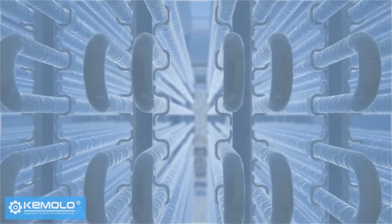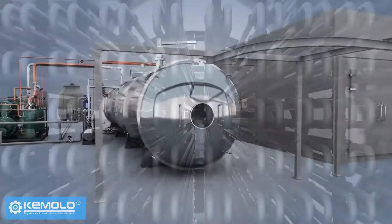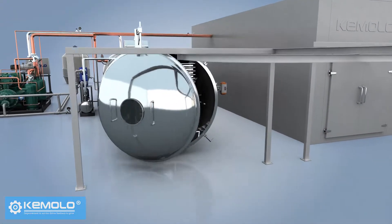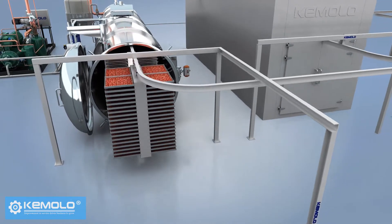After discharging, the frost on the water vapor collector needs to be defrosted for the next batch of production. Therefore, the freeze drying must be produced in batches and the interval between each batch is about 1 to 2 hours.